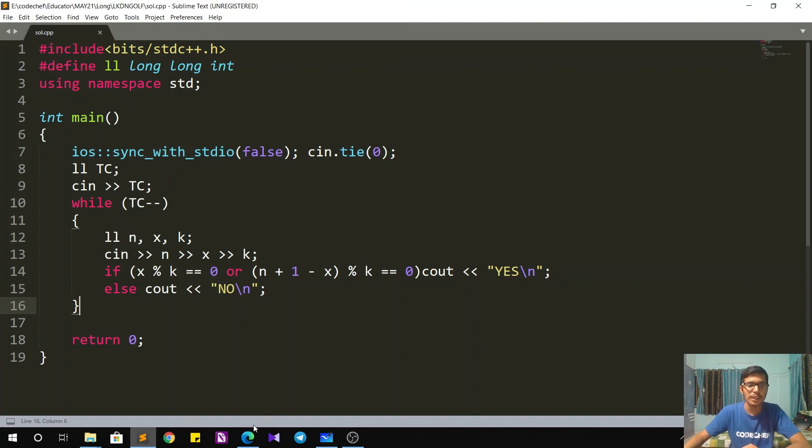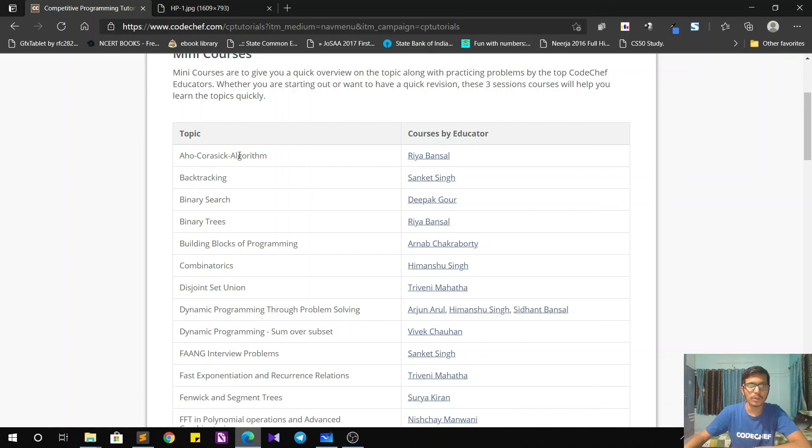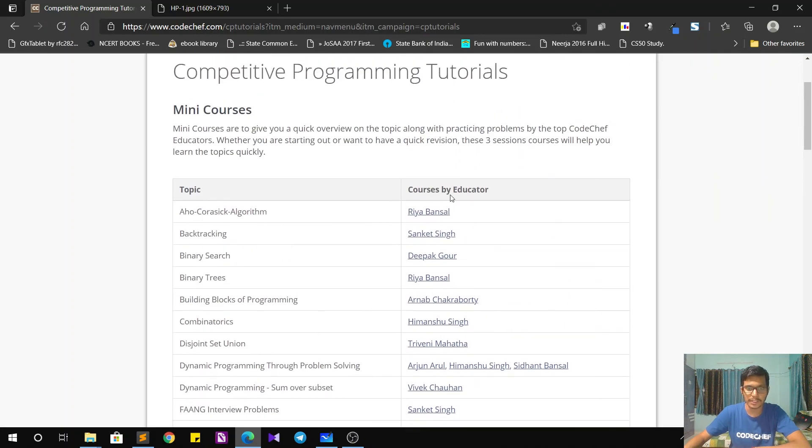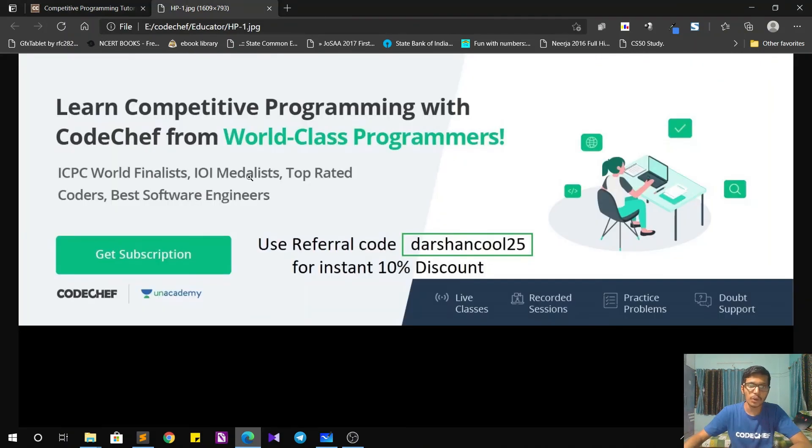Now I would like to tell you guys about the competitive programming tutorials that we have at CodeChef. If you are new to programming and want to learn concepts, you can go over here and learn the concepts which are taught by expert educators and they are all available for free and it covers pretty much everything there is in competitive programming. Also if you want even more structured content, don't forget to opt for our Academy Plus subscription and while doing so use my referral code darshan koon25 to get instant 10% discount.